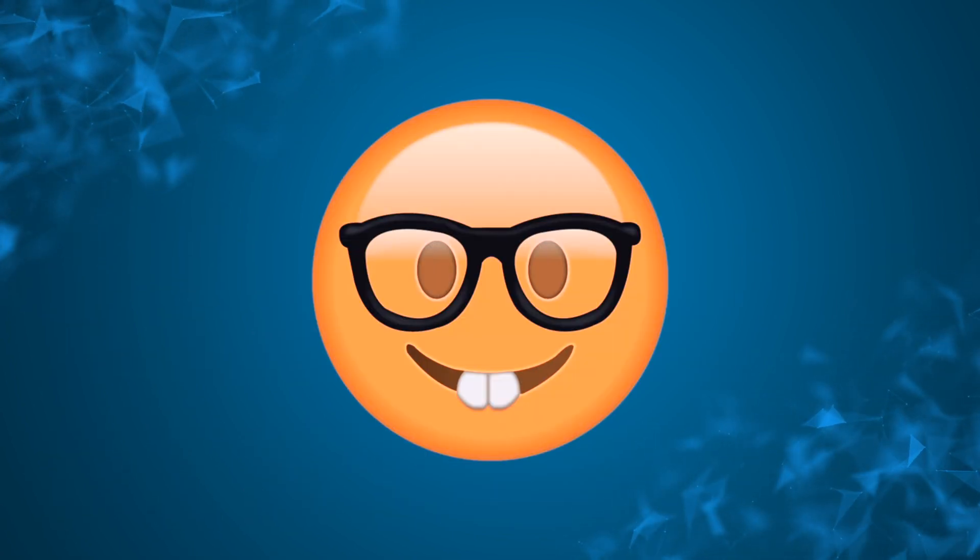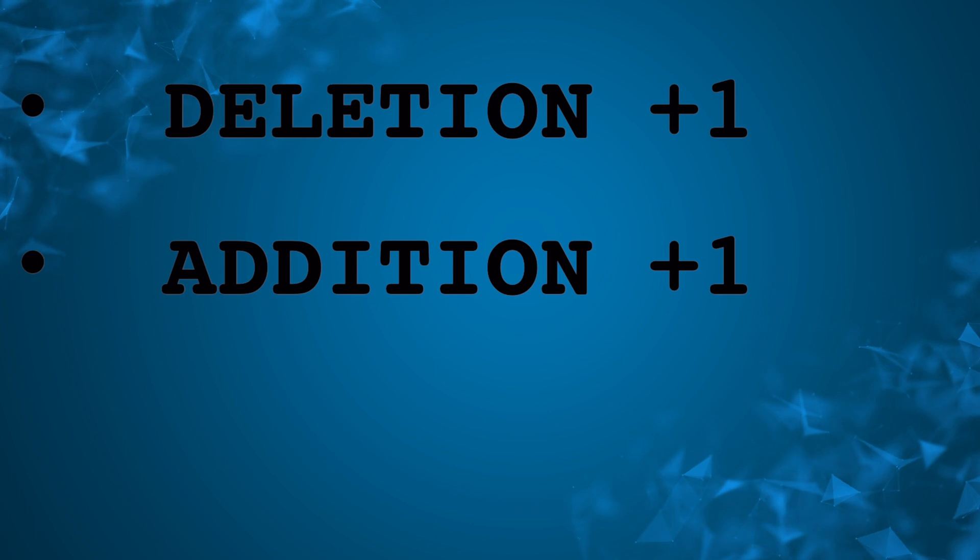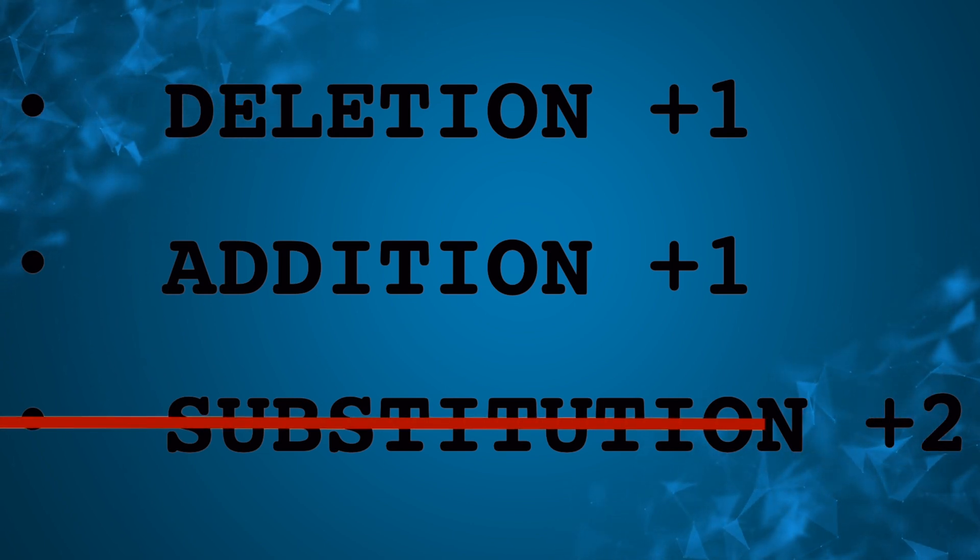When we need to correct the spelling of a word, every letter deletion will count as one, every letter addition will count as one, and every letter substitution will count as two. But really a substitution is just a deletion and an insertion combined, so you can pretty much ignore that for the sake of simplicity.